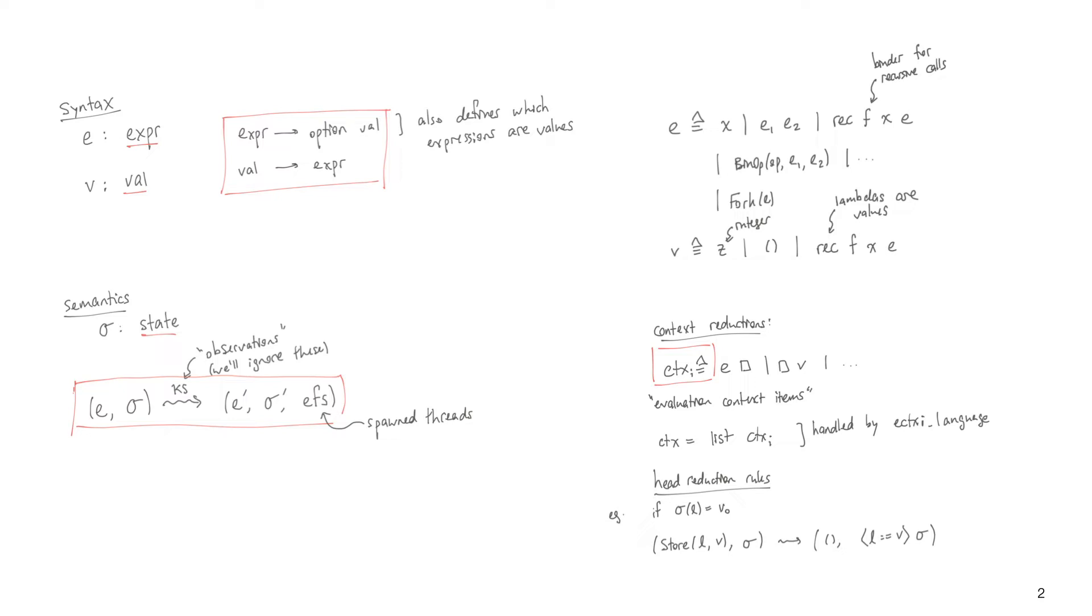It's worth mentioning here that Iris has a lower-level language interface where the user simply directly gives the transition relation on the left. What I've shown here uses the eContextI language feature of Iris, which handles all the work of going from contexts to a full transition semantics.